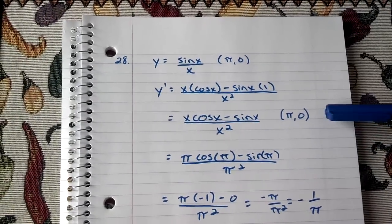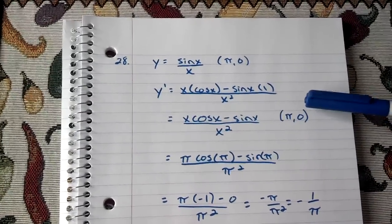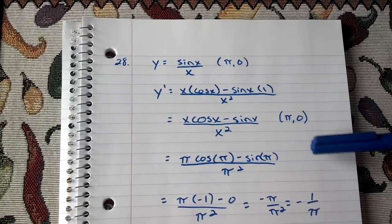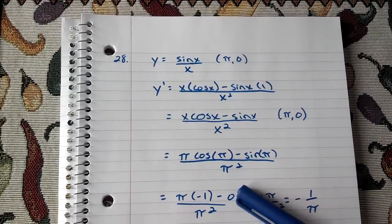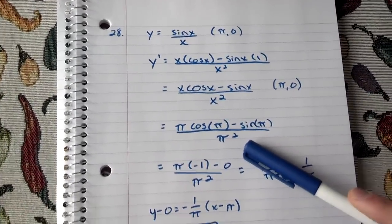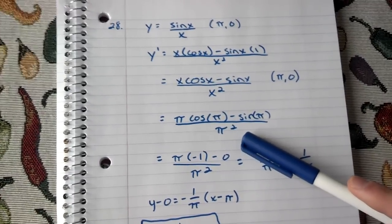Now from here, you go to the point that they gave you, which was pi, zero, and the x term is pi. So you just go ahead and plug that into the equation. So that gives you pi cosine times pi minus sine pi over pi squared.